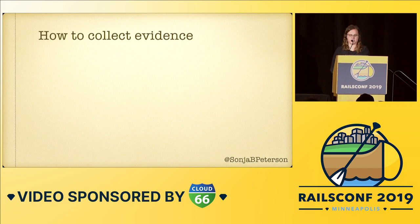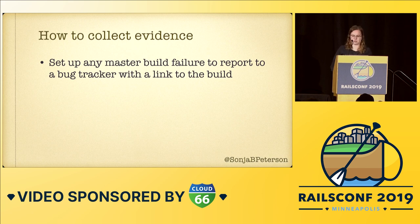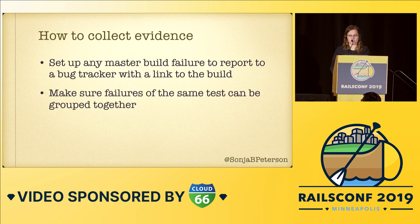A method I've used that works well is to have any time a test fails on your master branch automatically sent to a bug tracker with all the metadata you'd need, such as a link to the CI build where it failed. I've had success doing this with Rollbar, but other bug trackers would work as well. It's important to make sure failures for the same test can generally be grouped together in the bug tracker, so you can cross-reference between different occurrences and figure out what they have in common, which helps you understand why they're happening.